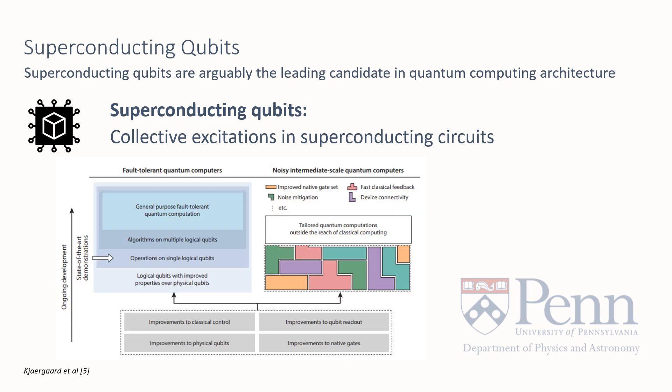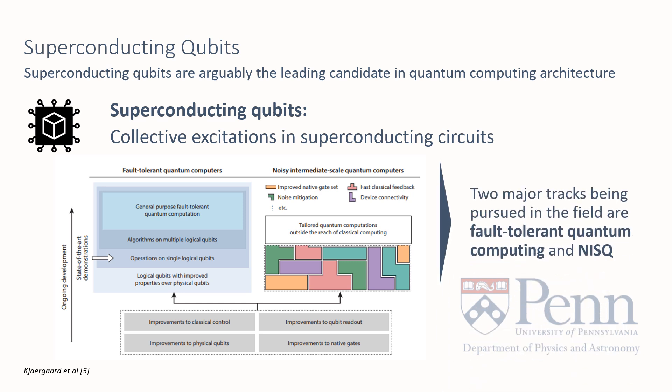Given recent work in this area, superconducting qubits are demonstrative of noisy intermediate-scale quantum computing, or NISQ, which we can see on the right of this diagram. This has the potential to outperform classical computers. These superconducting qubits have also provided some of the first implementations of multiple qubit gates on logical error-corrected qubits. These two major tracks of work are NISQ and fault-tolerant quantum computing.